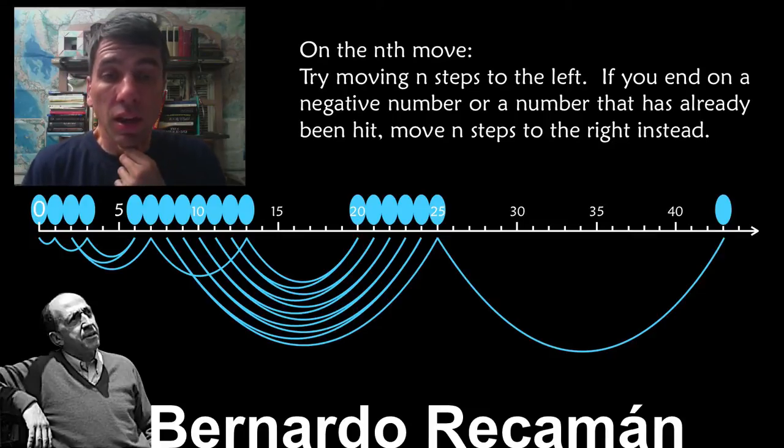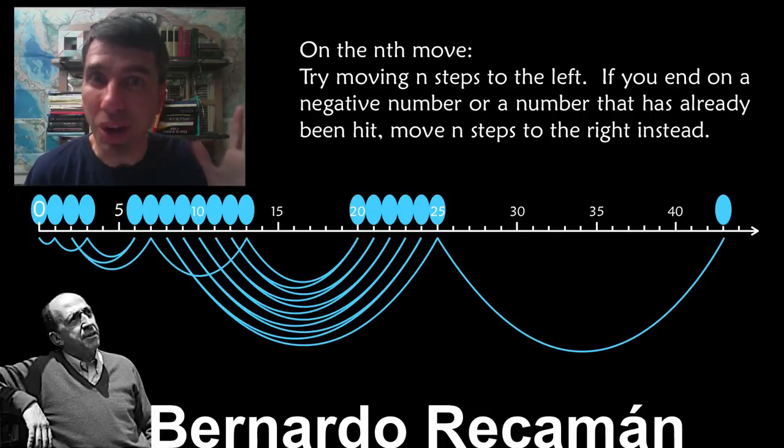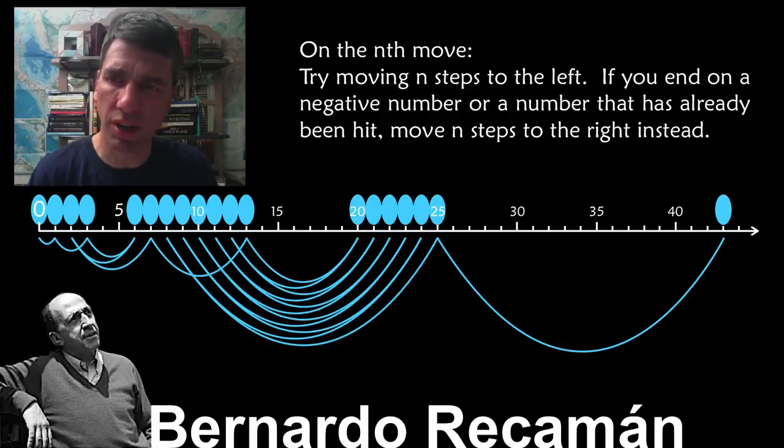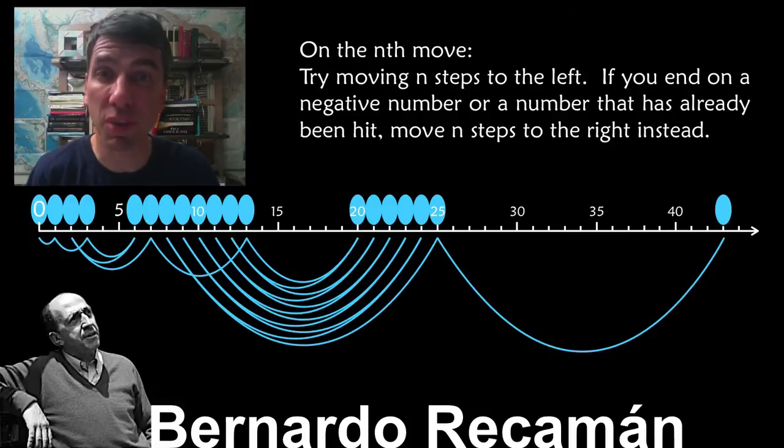And the unsolved problem of mathematics here, you know I love unsolved problems. The unsolved problem is, do you visit all of the numbers on this number line? Well, for example, now we haven't visited four and five, but if you go for long enough, I think you will probably visit them. But it's not obvious that you're going to visit them all. So unsolved problem of mathematics, and just a joyous way to use your number line.